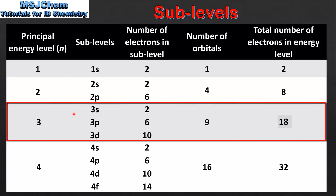Moving on to n=3, which has a 3s, a 3p, and a 3d sublevel. The 3s sublevel can hold 2 electrons, the 3p sublevel can hold 6, and the 3d sublevel can hold 10 electrons. The total number of atomic orbitals is 9, which can hold 18 electrons.